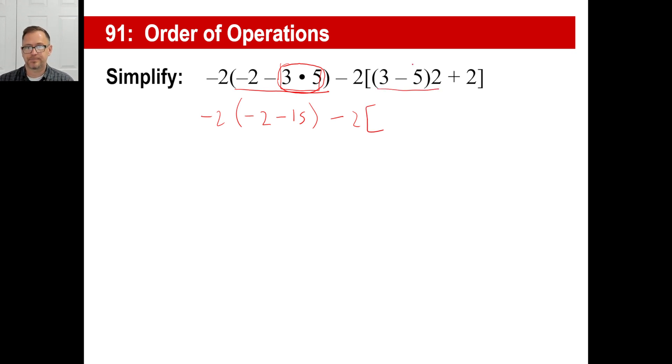3 minus 5, that is negative 2. Now, if you want to go ahead and do negative 2 times 2 and put negative 4 and then add the plus 2 at the very end, it's okay. But let's keep on our order of operations correct though, right? So here we're first, we'll do negative 2 minus 15 is negative 17. And then negative 2 and then negative 4 plus 2 is negative 2.